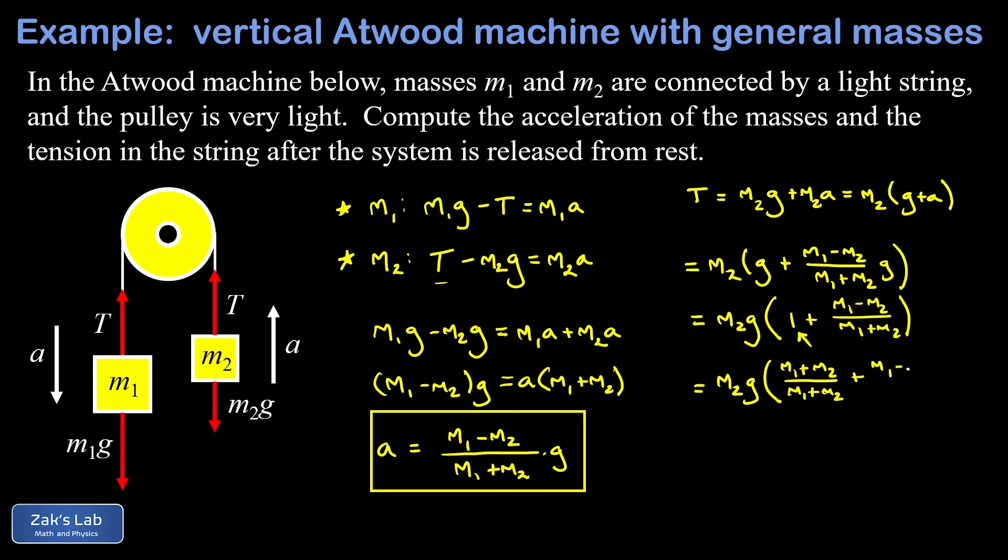Now we can go ahead and add the numerators of these two fractions. I notice I have an m2 and a negative m2 so those cancel out, and then I have an m1 plus another m1 that gives me two m1. So I have m2g times two m1 over m1 plus m2.